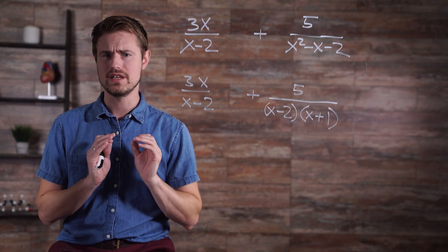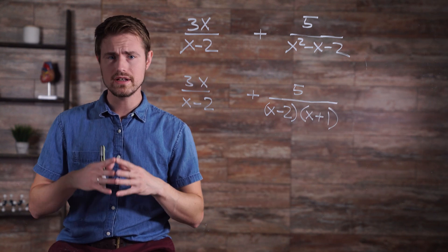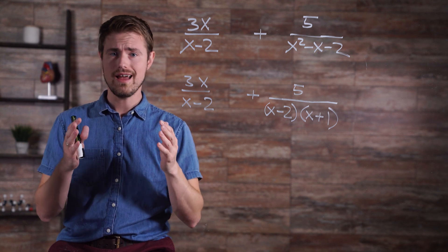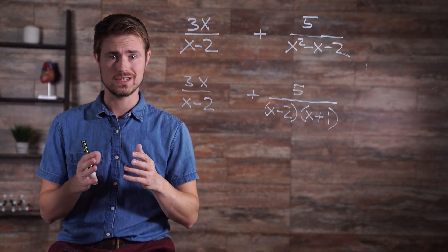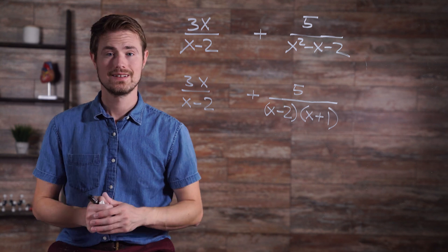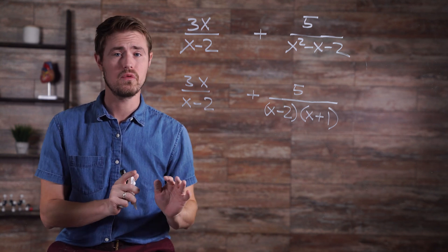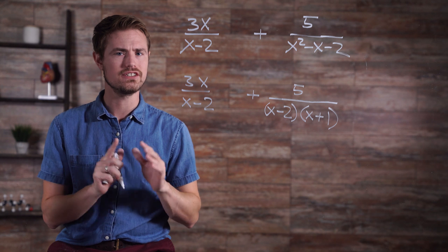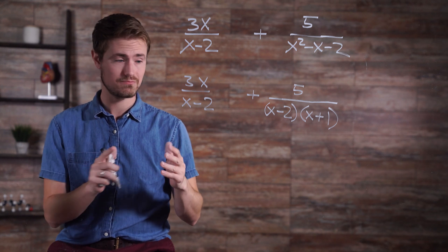Now, we want to determine the lowest common denominator. What is the smallest multiple of x minus 2 and x minus 2 times x plus 1? Alright, now that we have our equations written out, we want to make sure that we don't have any domains that need to be excluded, which we do.